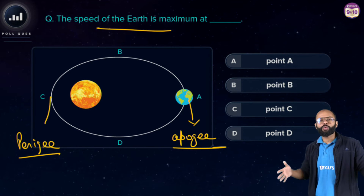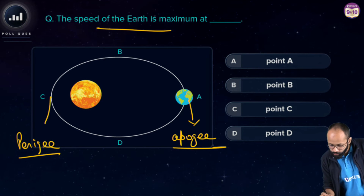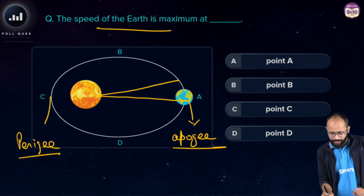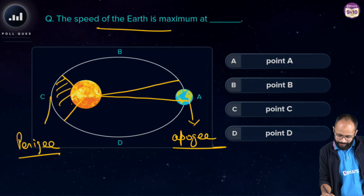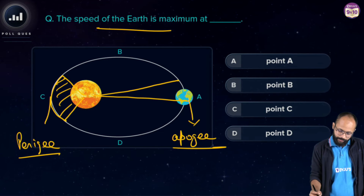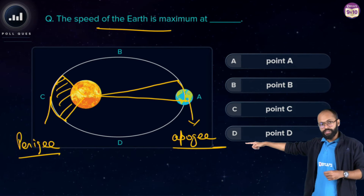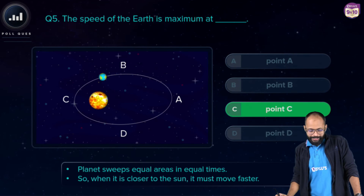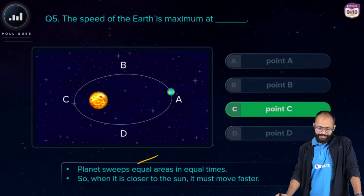When the planet is far it covers a small arc in the same time, and when near it covers a larger arc — so speed is less when far and more when near. Therefore the speed of Earth is maximum at point C, the perigee point. The planet sweeps equal areas in equal times, so it moves faster when closer to the sun.